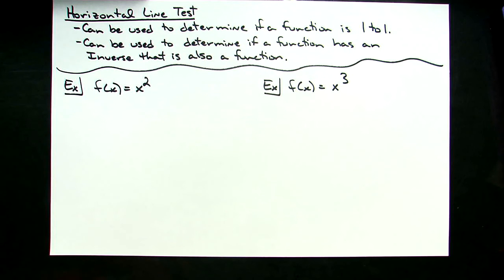What we're going to be looking at today is the horizontal line test. This is a very handy feature that can be used to help you determine if a function is one to one.